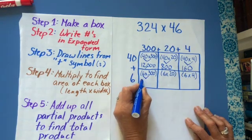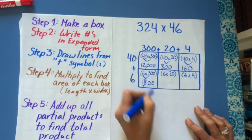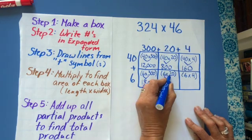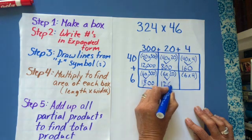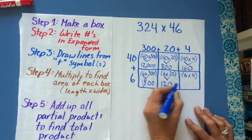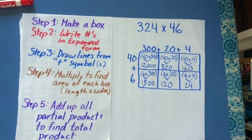6 times 3 is 18, two zeros. The fourth partial product. 6 times 2 is 12 plus one zero. That's almost your last partial product. And here's your last one, 24. So I've got six partial products. Partial products are like subtotals. Then you add them all up to get the total product.